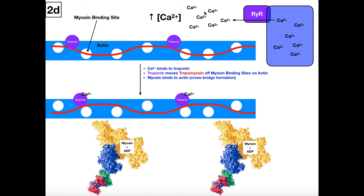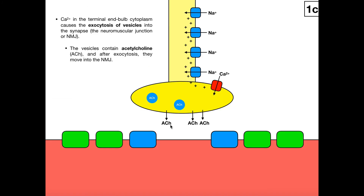When you want to terminate muscle contraction, there are several ways this occurs. One way is that calcium is removed from the sarcoplasm. Also, the acetylcholine has to be degraded through an enzyme called acetylcholinesterase. We're going to talk in a separate video about how we terminate a muscle contraction, but for now I'm just mentioning those two things briefly.